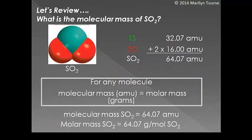Let's quickly review this concept. So if I asked you, what is the molecular mass of sulfur dioxide, SO2? How would you do that? You would add up one atomic mass unit of sulfur, which is 32.07, and then you would add up two oxygens, which each are worth 16. It ends up being 64.07 AMU.